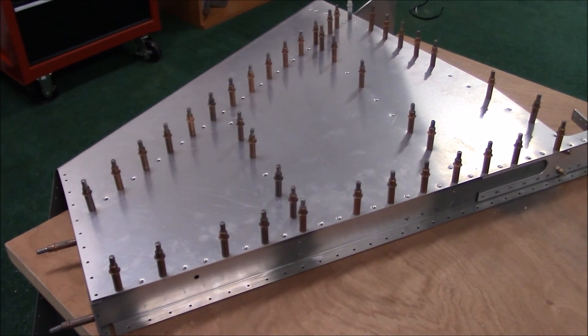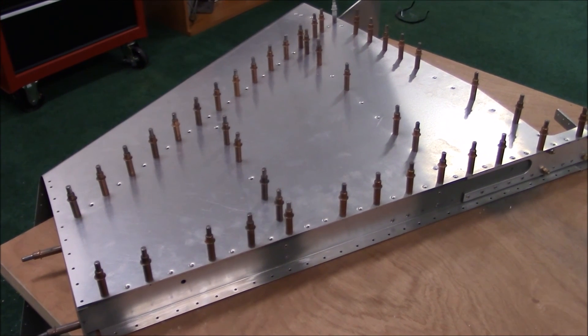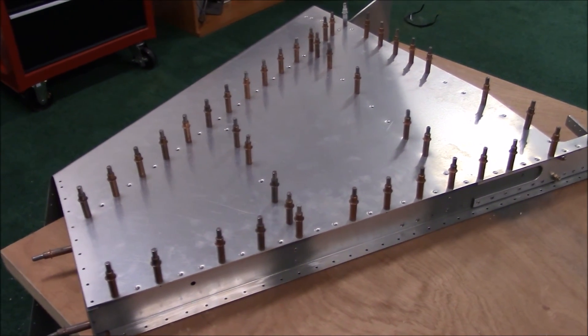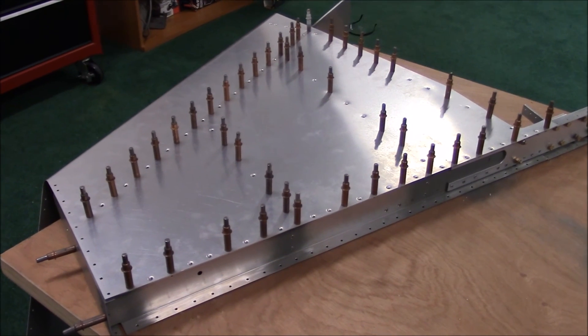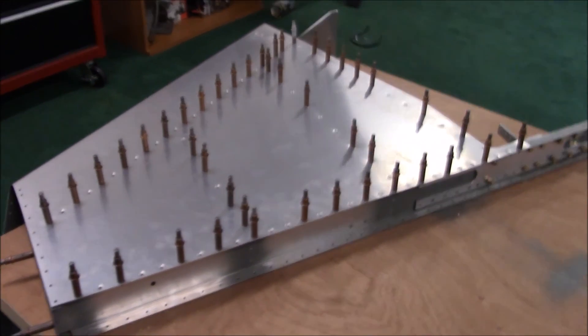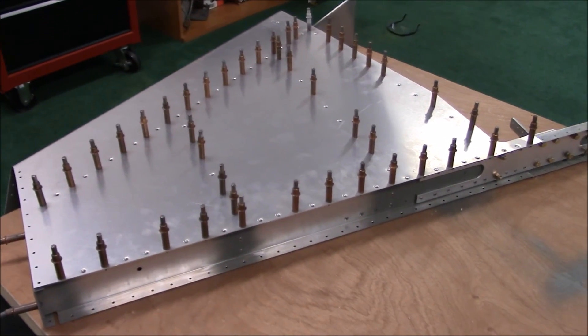I have it already Cleco'd up, and I'm going to flush rivet this section, and then I'm going to buy the wire to run the position lights in it, and I'll rivet the next section after I have the wire run through.